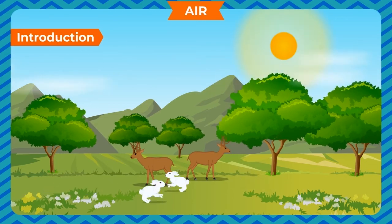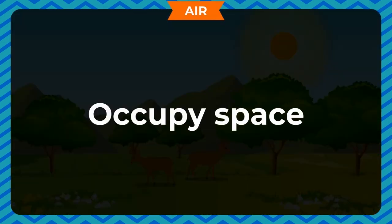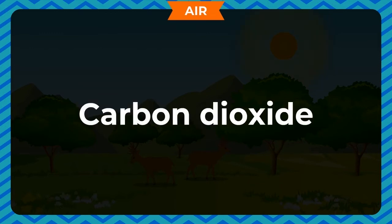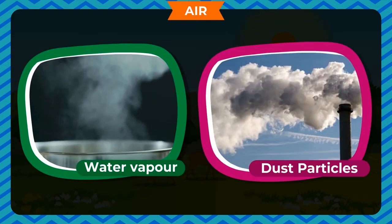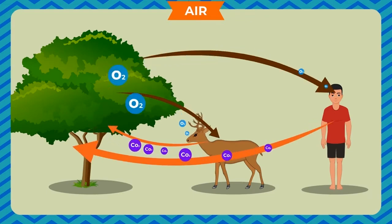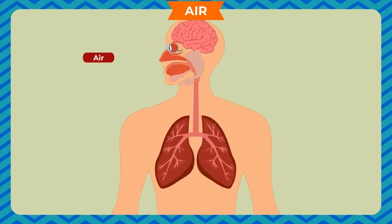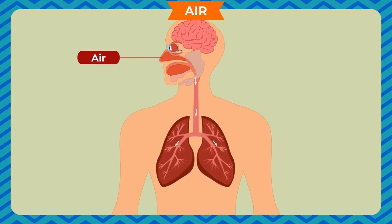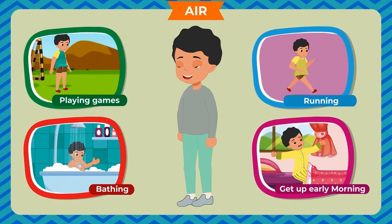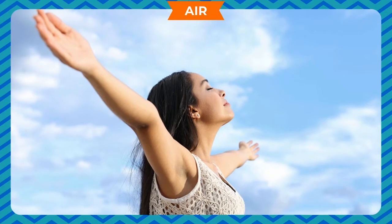Air is a mixture of many gases that make up the earth's atmosphere. It has mass, occupies space, exerts pressure, and supports burning. Nitrogen, oxygen, carbon dioxide, other gases, water vapor, and dust particles are present in the air. Oxygen gas is an important component of air. Human beings and animals breathe air. You cannot live without air. Air cannot be seen or tasted — it can only be felt.